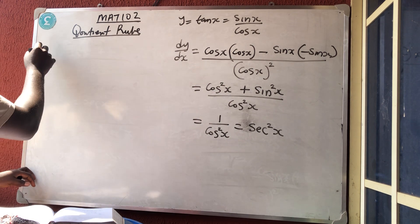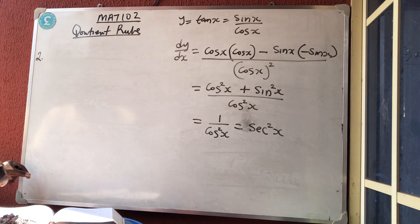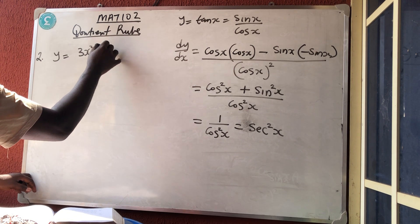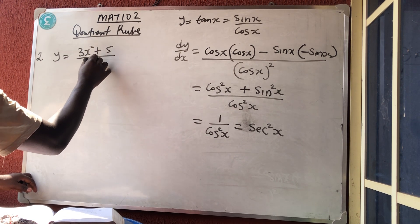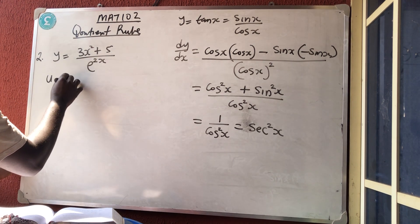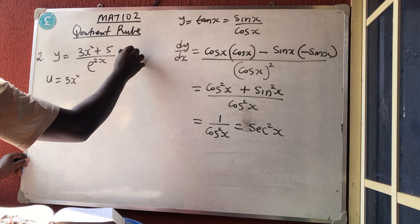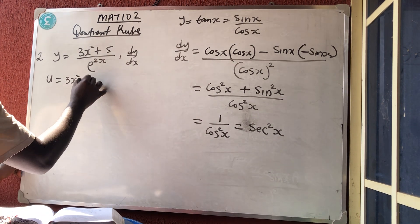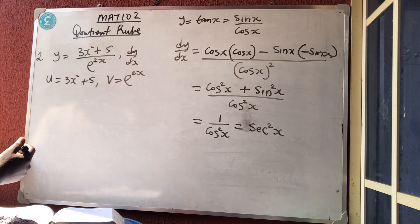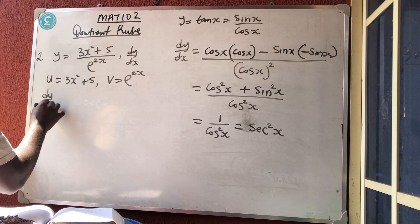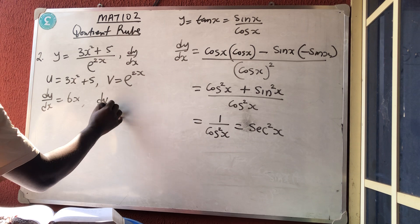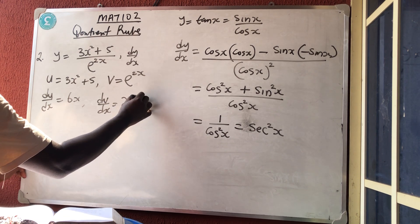Example 2: if y equals (3x² + 5) all over e raised to power 2x, find dy/dx. We identify u equals 3x² + 5 and v equals e raised to power 2x. So du/dx equals 6x, and dv/dx equals 2e raised to power 2x.